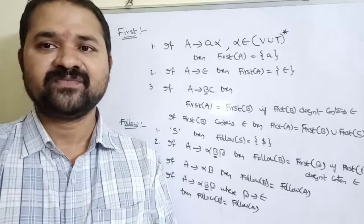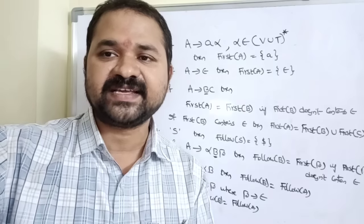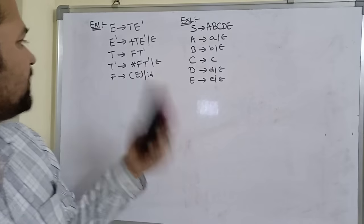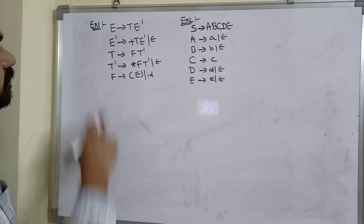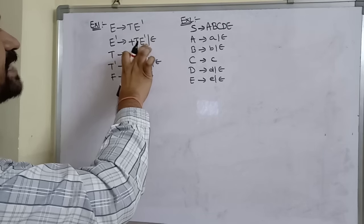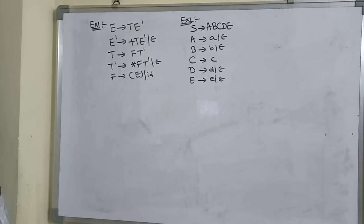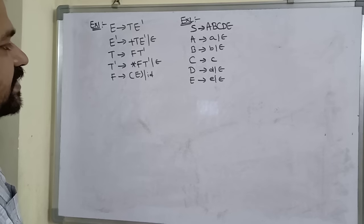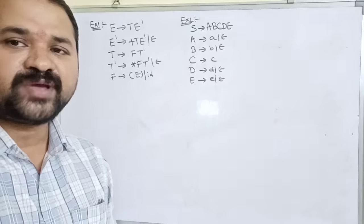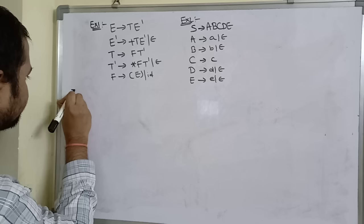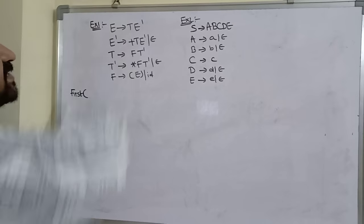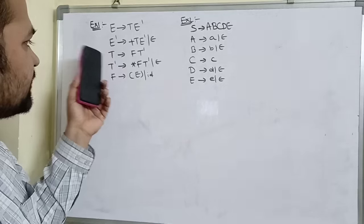Now let us see the first example. The grammar is: E implies T·E', E' implies plus·T·E' or epsilon, T implies F·T', T' implies star·F·T' or epsilon, F implies left-parenthesis·E·right-parenthesis or ID. We have to calculate FIRST for E, E', T, T', and F.